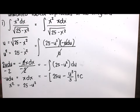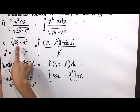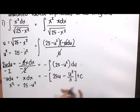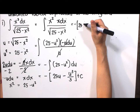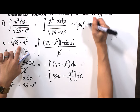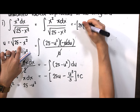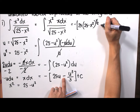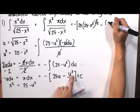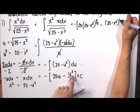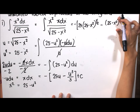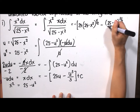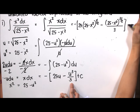After integrating, we substitute back from a function of u to x. Since u equals the square root of 25 minus x squared, we replace u with (25 minus x squared)^(1/2). So the result is negative of 25 times (25 minus x squared)^(1/2) minus (25 minus x squared)^(3/2) divided by 3, plus C.